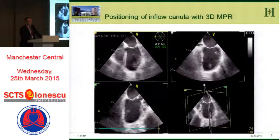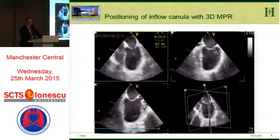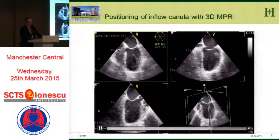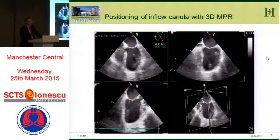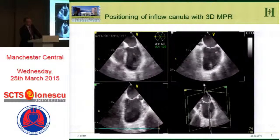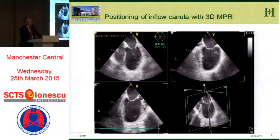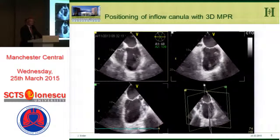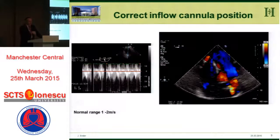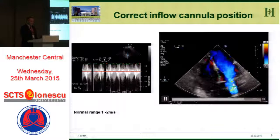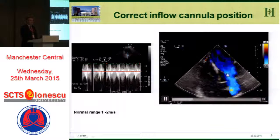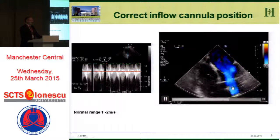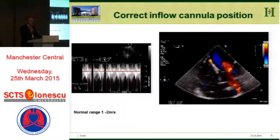For positioning of the inflow cannula, 3D multiplane reconstruction is very helpful because you have the 4-chamber view and 2-chamber view to guide the surgeon to an optimal position. An optimal position of the inflow cannula ensures fewer postoperative problems. A good position is when the inflow is directed toward the mitral valve. With color flow, you can see nice flow into the inflow cannula with no disturbance, and with PW Doppler you have around 1 meter per second.